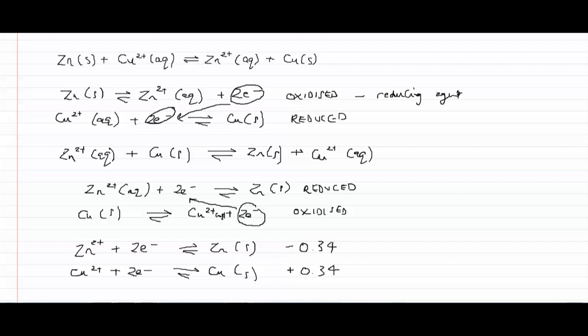And the most likely reducing agent, the one that's most likely to give up electrons to be oxidized, is the one with the most negative reduction potential. So in this case, it's the zinc.